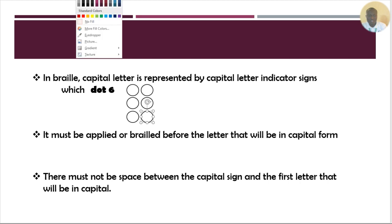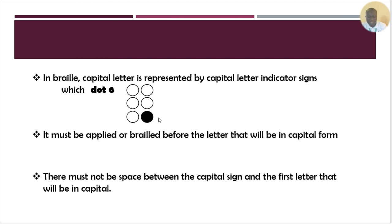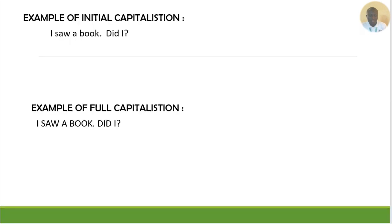Dot 6 is represented here. If any reader sees dot 6, they should keep in mind that the sentence uses capital letters — either full capitalization or initial capitalization. When using dot 6, you must braille it before the letter — it must precede the capital letter. There must not be any space between the capital sign and the first letter that will be capitalized.